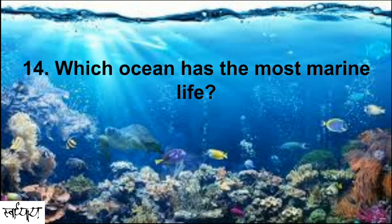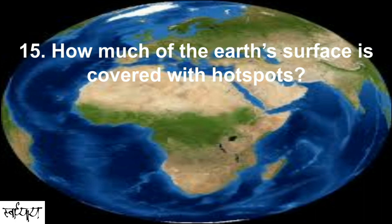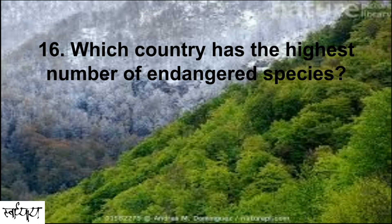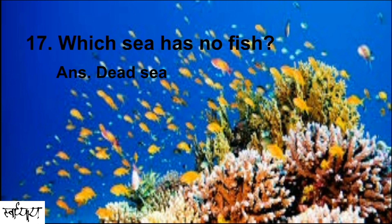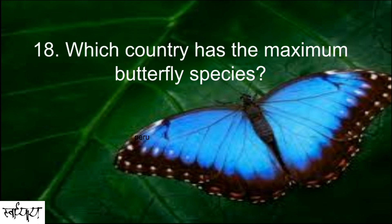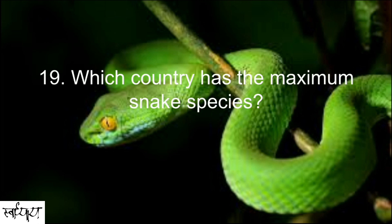Which ocean has the most marine life? Answer: Pacific Ocean. How much of the Earth's surface is covered with hotspots? Answer: 2.4%. Which country has the highest number of endangered species? Answer: Ecuador. Which sea has no fish? Answer: Dead Sea. Which country has the maximum butterfly species? Answer: Peru. Which country has the maximum snake species? Answer: Brazil.